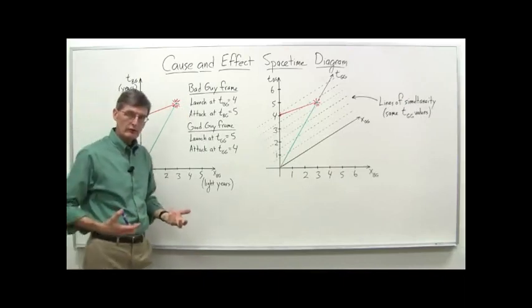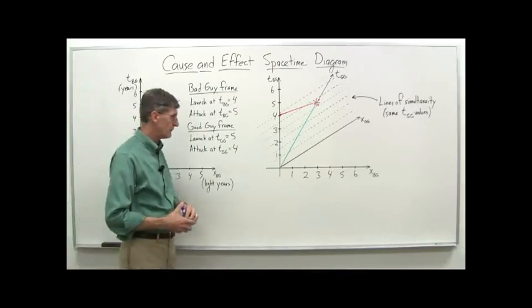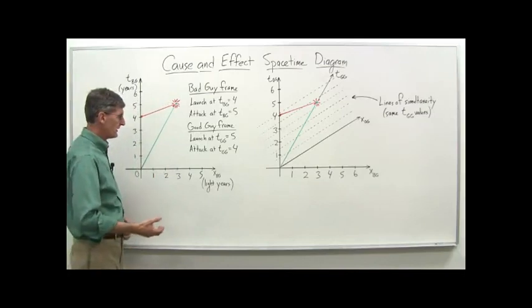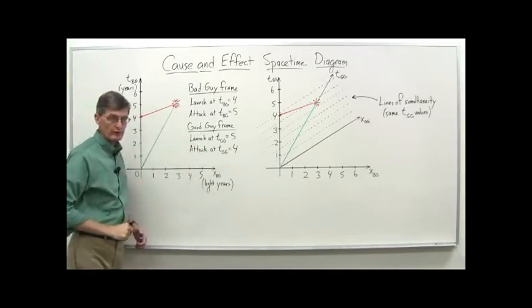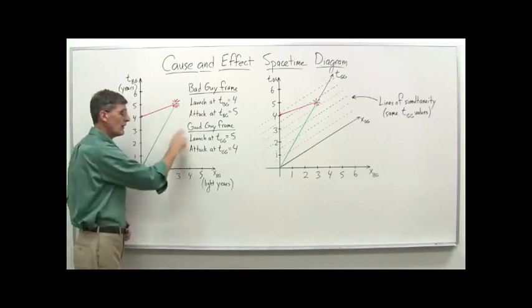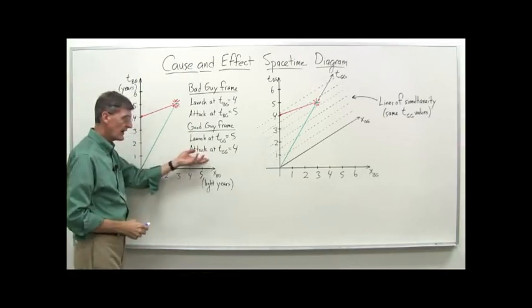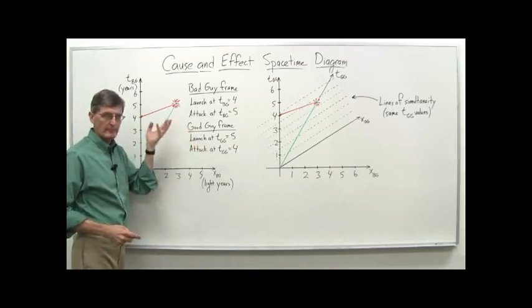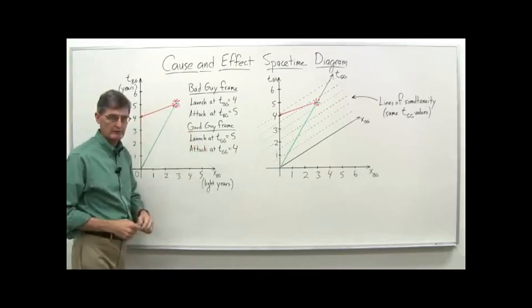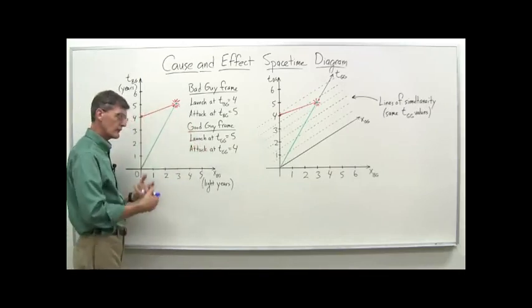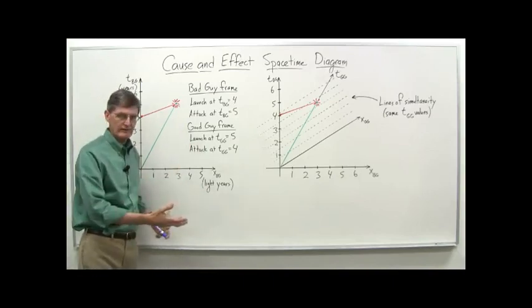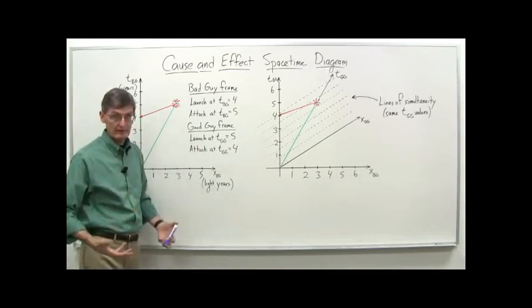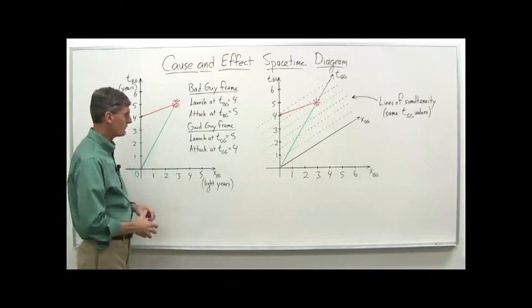And then we analyzed it from the good guys' frame of reference, using the Lorentz transformation, and discovered that the attack occurred at four years in their frame of reference, but the launch occurred at five years. In other words, the attack occurred even before the super spaceship had been launched, and therefore clearly a violation of cause and effect. You can't have an attack if the spaceship hasn't maybe even been invented yet and certainly hasn't been launched at that point.